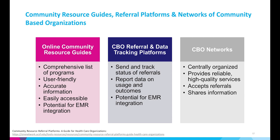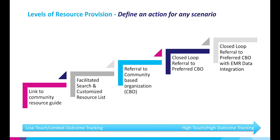Community-based organization networks are centrally organized. They provide reliable, high-quality services, accept referrals, and share information. When thinking about how to leverage these different resources, it's best to think about how to define an action or a resource for any scenario. On the low-touch, limited-outcome tracking end of the spectrum, a link to an online community resource page can be provided to a patient. One step up is for a care team member to facilitate a search based on known social needs and provide a customized resource list. Beyond that, a care team member can make a referral to a community-based organization. Even better, a closed-loop referral to a preferred CBO, or a closed-loop referral to a preferred CBO where data is shared through electronic medical record data integration.